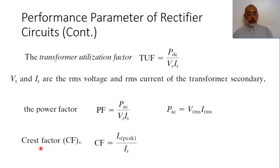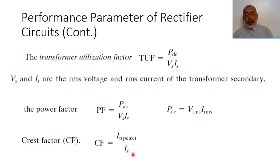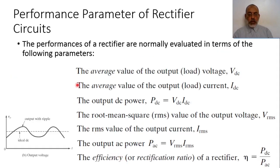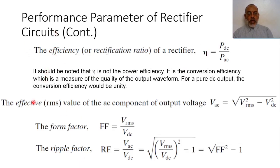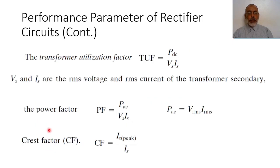The final factor is the crest factor, which is the peak current of the secondary of the transformer divided by the root mean squared current of the transformer. In total, there are 13 parameters for the rectifier circuit which we have to memorize, and we should understand the meaning of every one of these parameters.